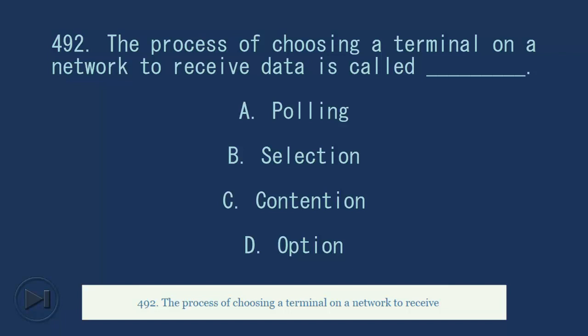492. The process of choosing a terminal on a network to receive data is called blank. A. Polling. B. Selection. C. Contention. D. Option. Answer, B. Selection.